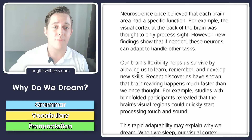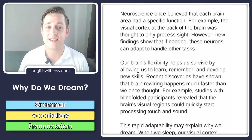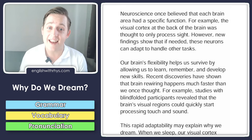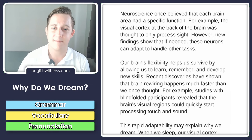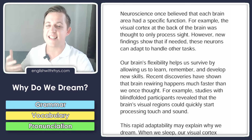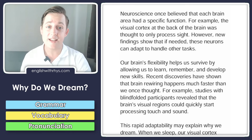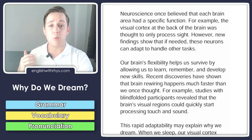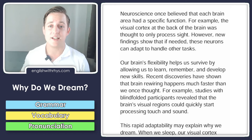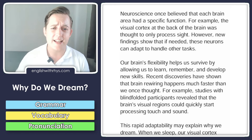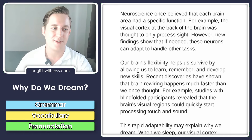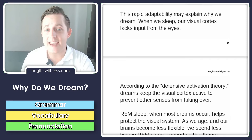For example, the visual cortex at the back of the brain was thought to only process sight. However, new findings show that if needed, these neurons can adapt to handle other tasks. Our brain's flexibility helps us survive by allowing us to learn, remember, and develop new skills. Recent discoveries have shown that brain rewiring happens much faster than we once thought.